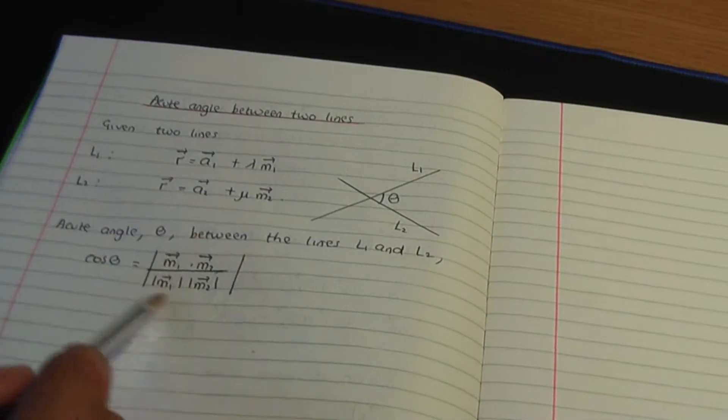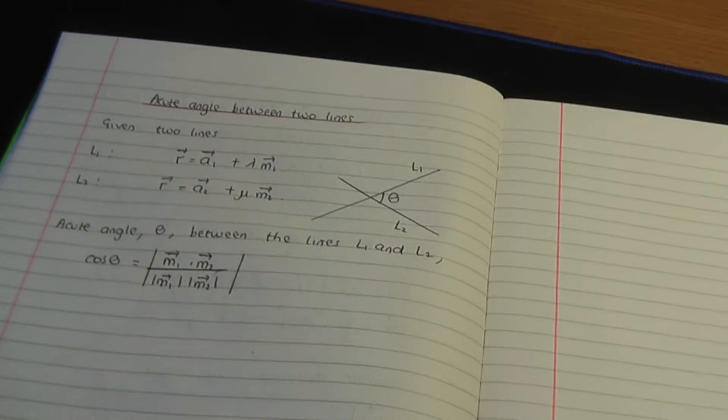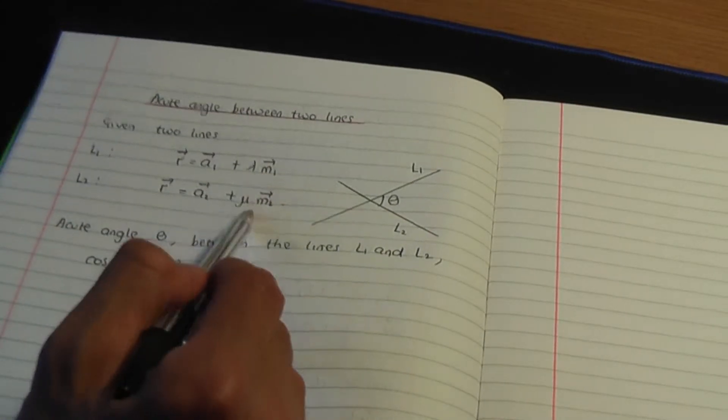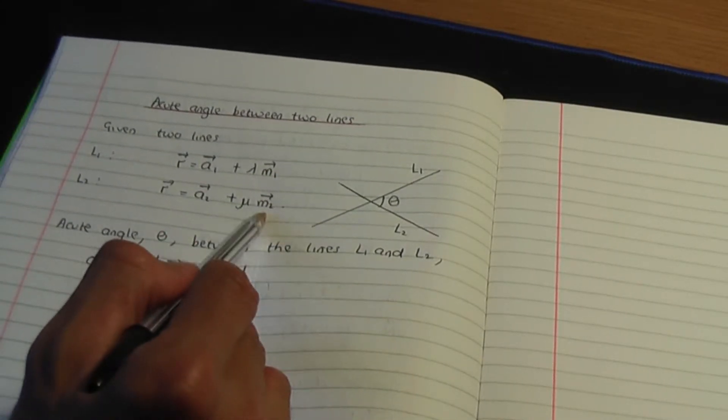So this formula enables you to work out the acute angle between two lines. And as you can see from the formula, it only depends on the direction vectors of the lines.